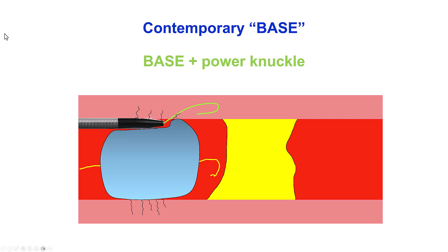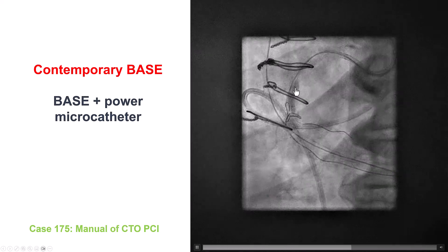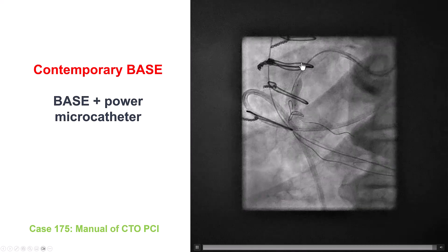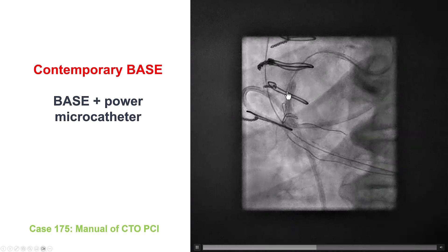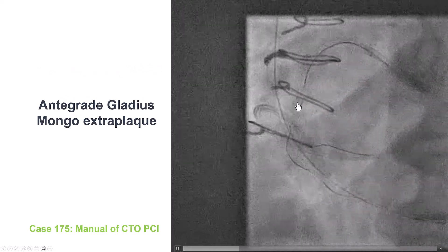That describes the traditional BASE technique. What we currently prefer is the contemporary BASE: a combination of the balloon for creating dissections while also having the microcatheter right there alongside a polymer-jacketed guide wire — essentially a combination of BASE with a power knuckle. Power knuckle means you have a microcatheter and a balloon inflated next to the microcatheter, pushing the microcatheter against the vessel wall and helping the polymer-jacketed wire advance into the extra-plaque space. An example shows a coronary artery CTO with a balloon inflated in the mid-vessel, the antegrade microcatheter halfway along the course of the balloon, and a polymer-jacketed wire eventually finding its way into the extra-plaque space and forming a knuckle.